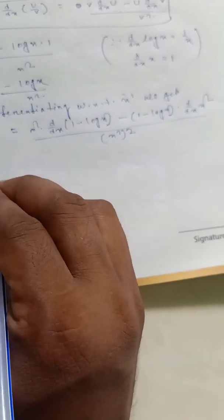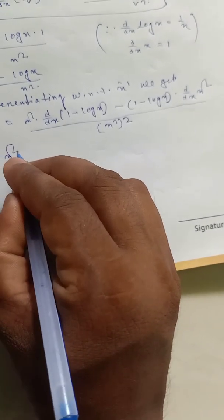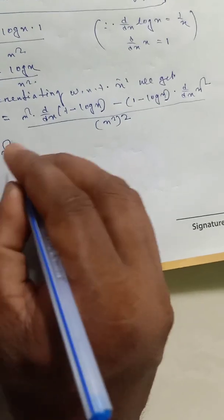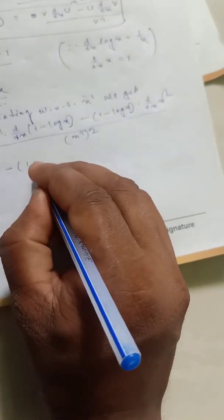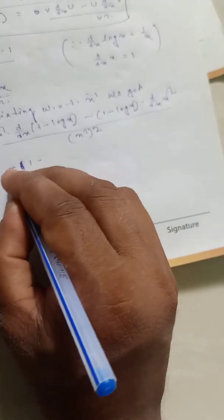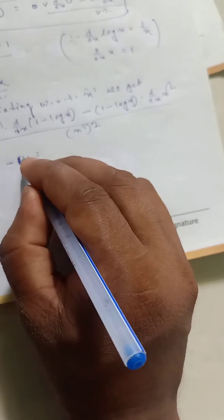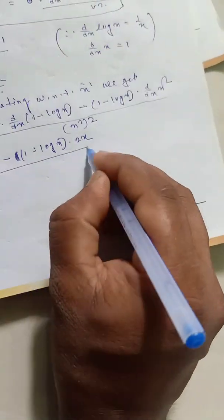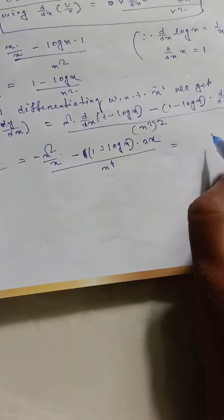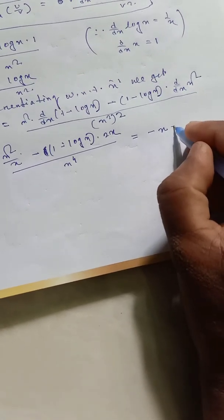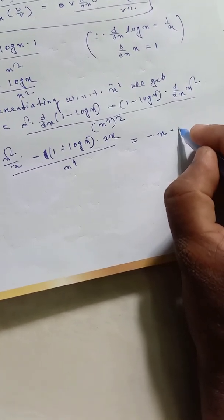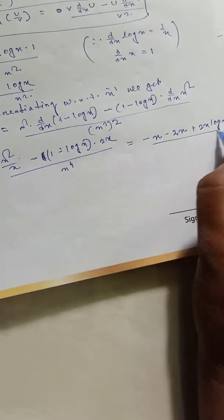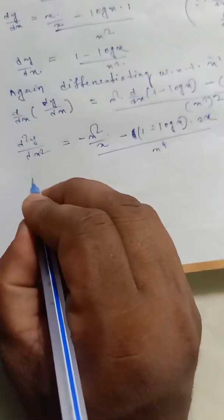So d square y by dx square equals x square times (derivative of 1 is 0, minus derivative of log x is 1 by x) minus (1 minus log x) times 2x, divided by x to the fourth. Simplifying: x square times negative 1 by x gives negative x, and minus minus plus gives plus 2x log x, so we get negative x plus 2x log x divided by x to the fourth.